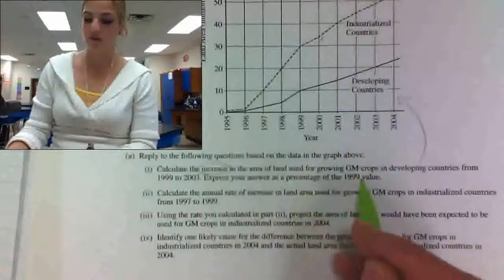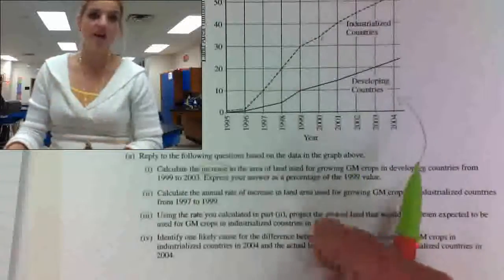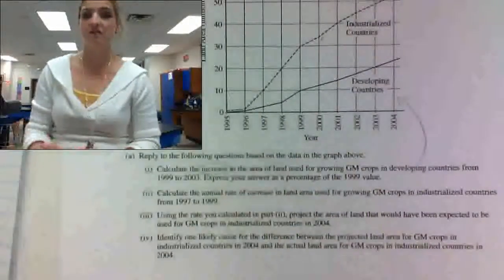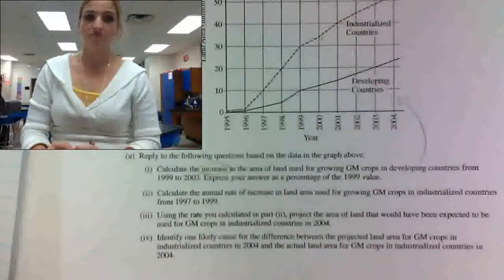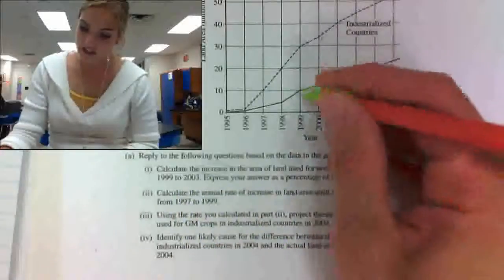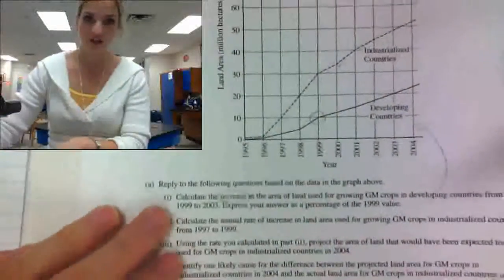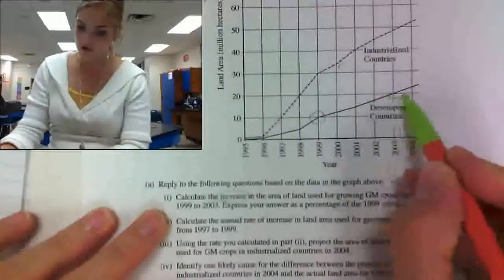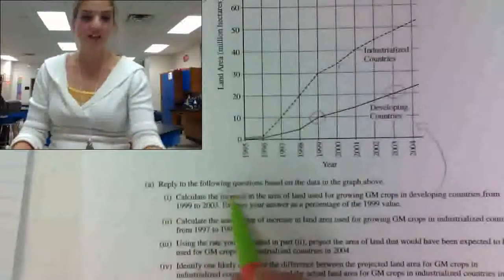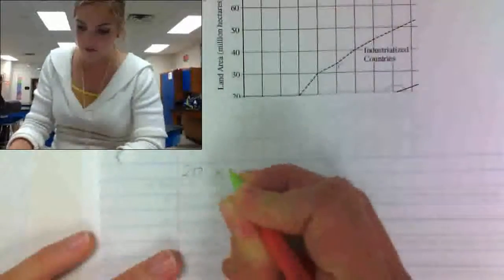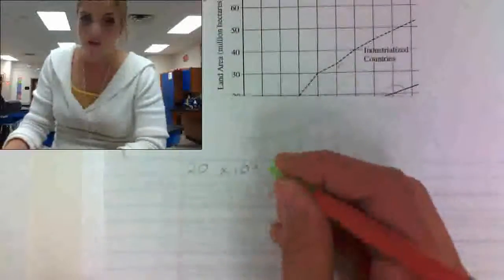It wants me to express my answer as a percentage of the 1999 value, so at the end I'm going to take my number and put it over the 1999 value, divide, and then multiply by 100 — because percent is part divided by whole times 100. If I look at the data from 1999, it used to be 10 million hectares, and now in 2003 it's showing 20 million hectares. So that's just an increase of 10 million hectares.